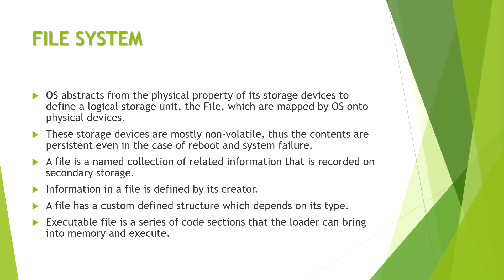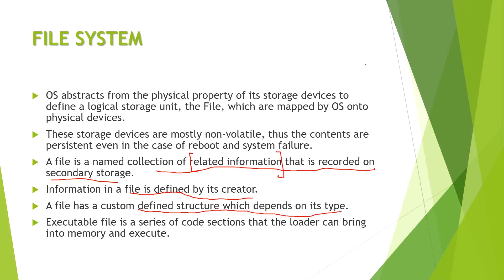As you can see in this slide, a file is a named collection of related information recorded on secondary storage. The information in a file is defined by its creator, not the programmer. A file has a custom-defined structure which depends on its type — text files have a different structure, binary files have a different structure, and an executable file is a series of code sections that the loader can bring into memory and execute.